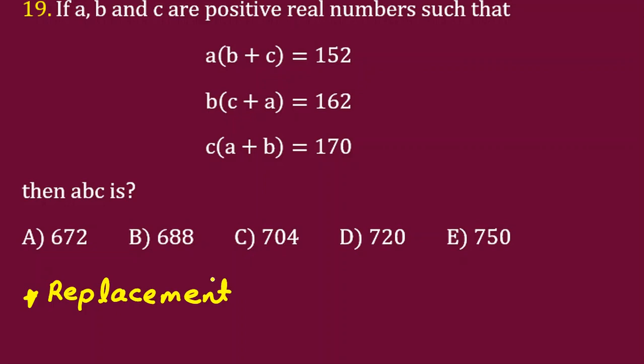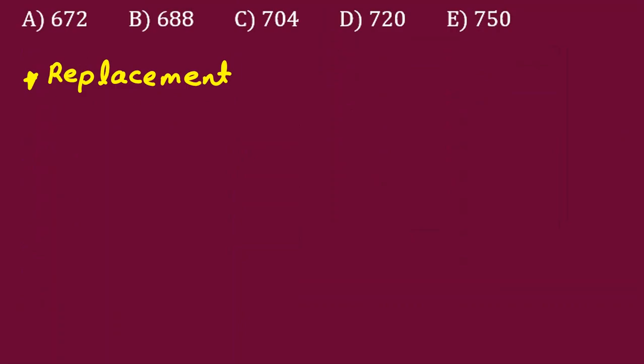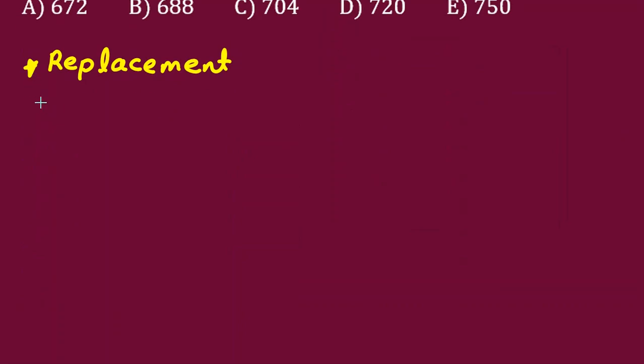Now we want to see how replacement here is so much useful. And if you want to know them, there are around 20 important ideas in algebra, and some important ideas in geometry, combinatorics, number theory. If you want to know them, feel free to send a message to my WhatsApp number in the description. So let's solve this problem with replacement.